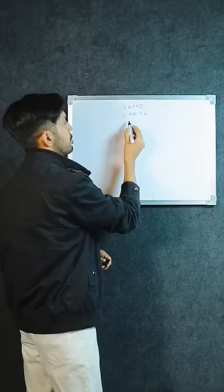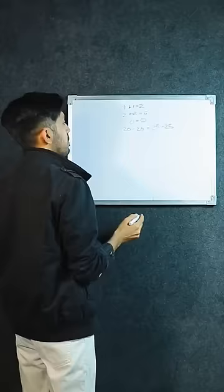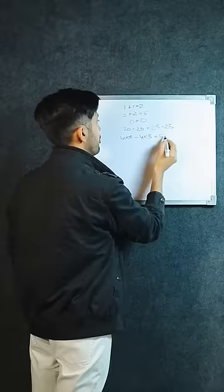When we start, let's say zero equals zero. What can we say about zero? Twenty minus twenty. What can we say about zero? Four into five minus four into five. And what can we say about twenty? Five into five minus five into five.